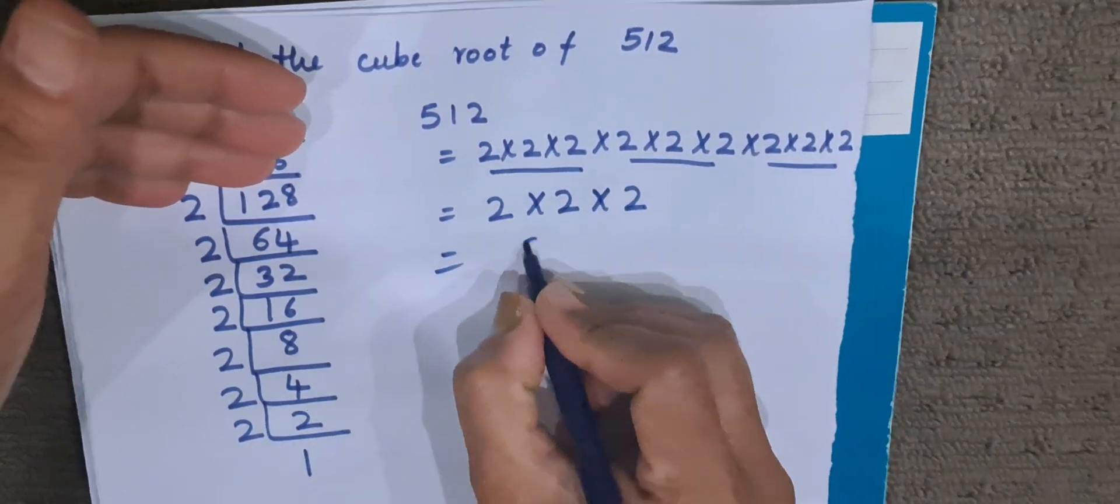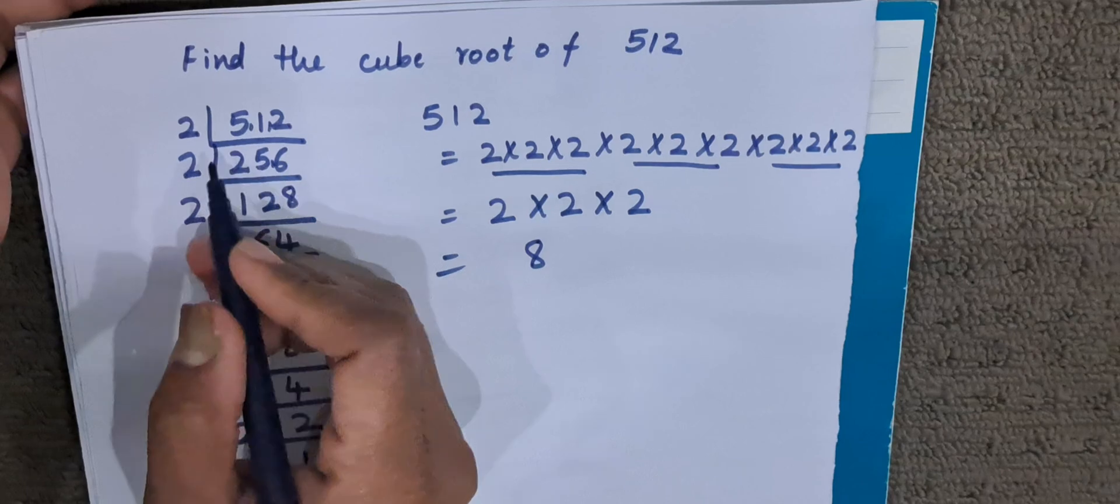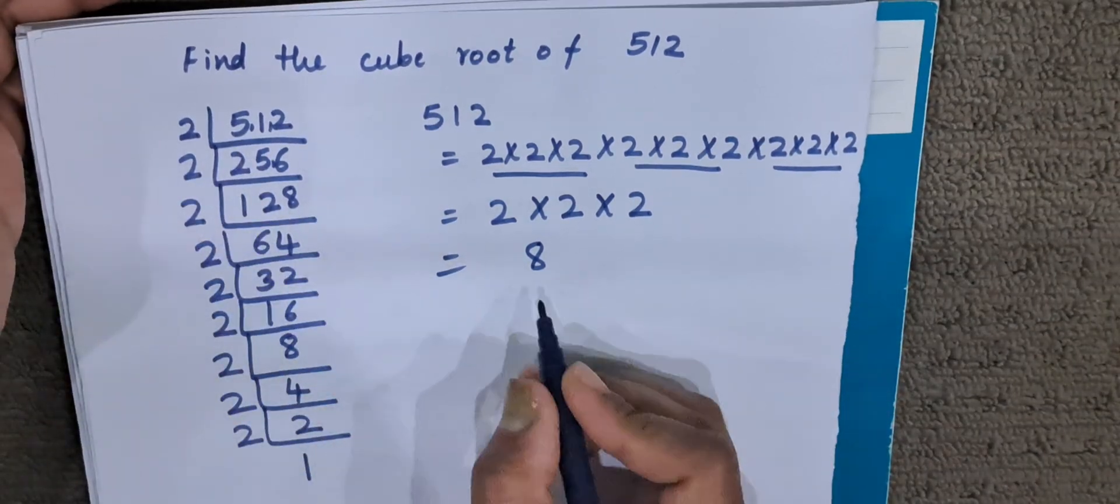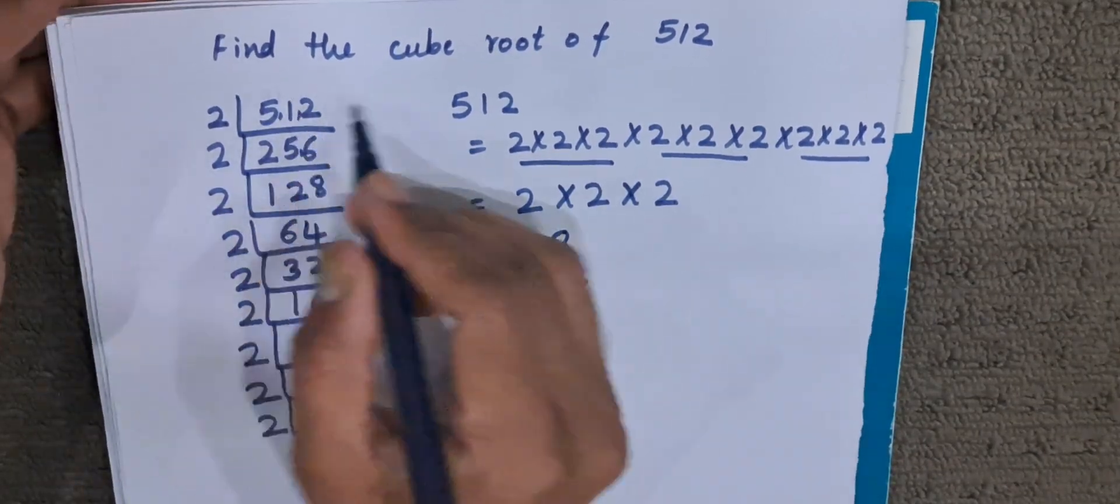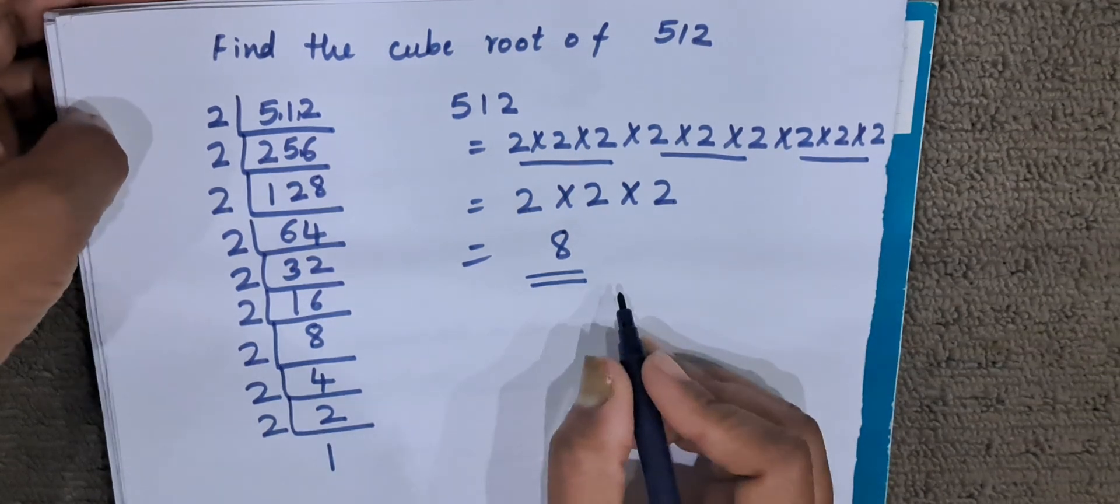So 2 times 2 is 4, 4 times 2 is 8. 8 is the cube root of 512. That is the answer. We have found the cube root of 512, that is 8.